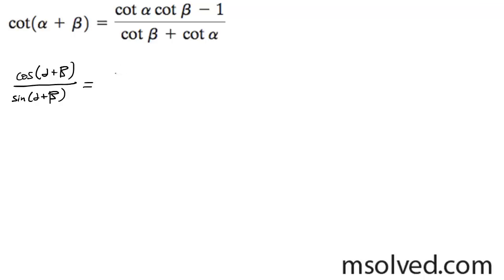So on the numerator here, I'm going to get cosine of alpha, cosine of beta minus sine of alpha, sine of beta. And on the denominator here, I'm going to get sine of alpha, cosine of beta plus sine of beta, cosine of alpha.